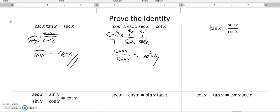That one's proven. Next one: tangent equals secant over cosecant. I'm going to manipulate the right hand side. Secant is one over cosine and cosecant is one over sine. I have a fraction divided by another fraction—one over cosine divided by one over sine.